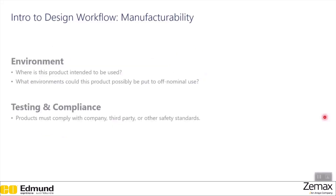For environmental considerations in DFM, the key questions are: where is this product intended to be used, and what environments could it possibly be subjected to in off-nominal use? For example, an optical system will not be designed or built the same way for use in outer space as for use on Earth. Finally, testing and compliance requires that products comply with company, third-party, or other safety standards, and it's good practice to continuously check your system against these standards.